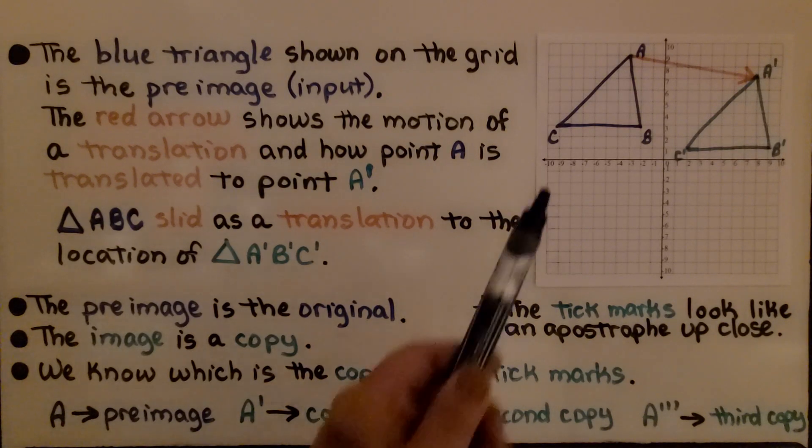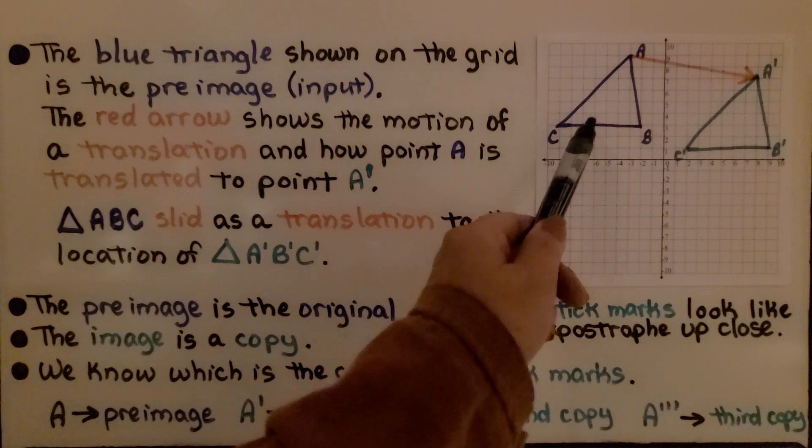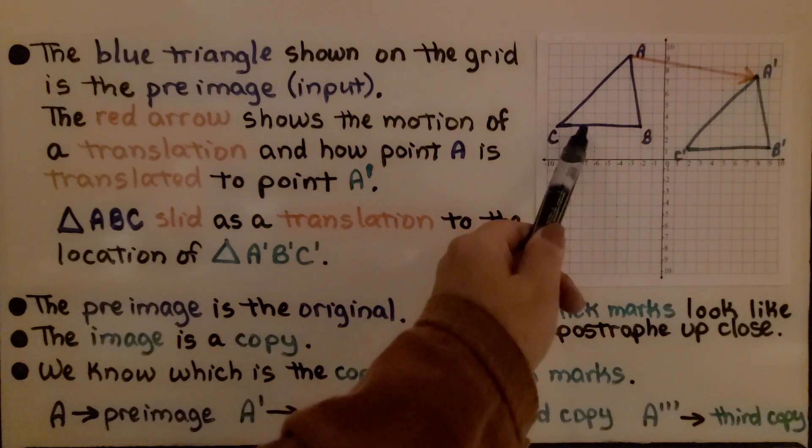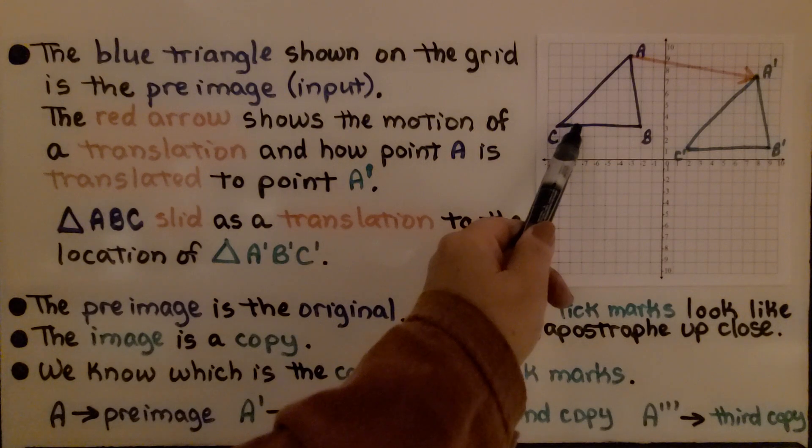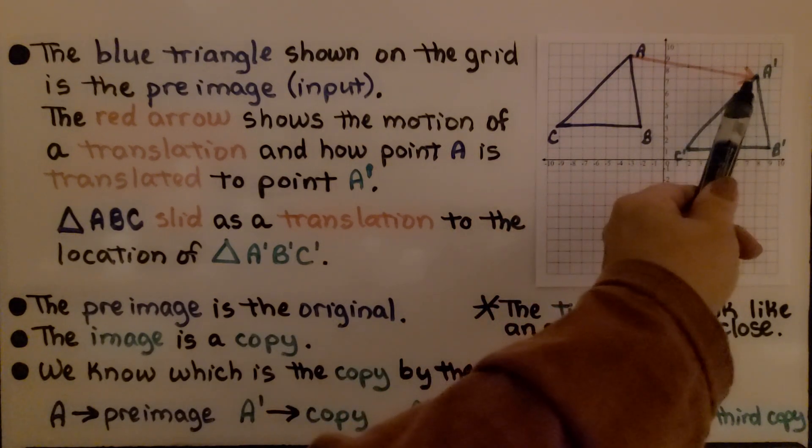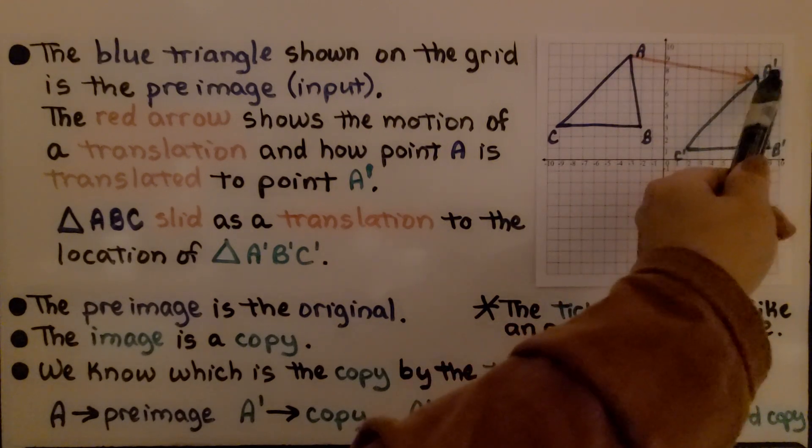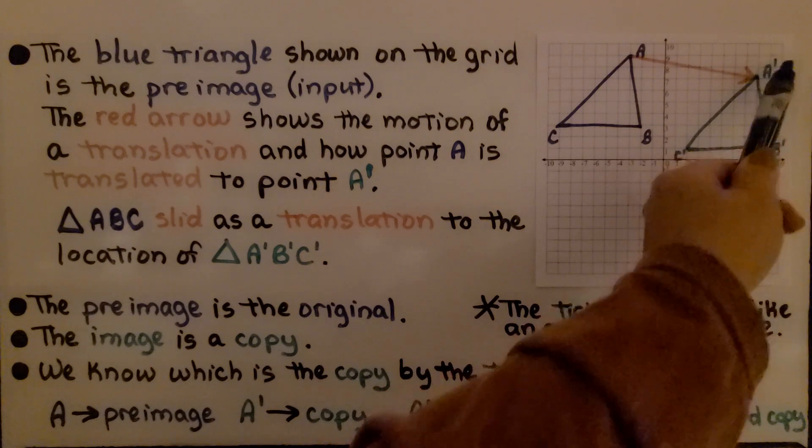It's a little hard to tell—this might look black, but this is a dark blue. The blue triangle shown on the grid is the pre-image, the input. This red arrow shows the motion of the translation and how point A is translated to point A prime. See that little mark up there?